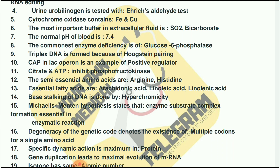Cytochrome oxidase contains iron and copper. The most important buffer in extracellular fluid is CO2 and bicarbonate. The normal pH of blood is 7.4. The commonest enzyme deficiency is of glucose-6-phosphatase.